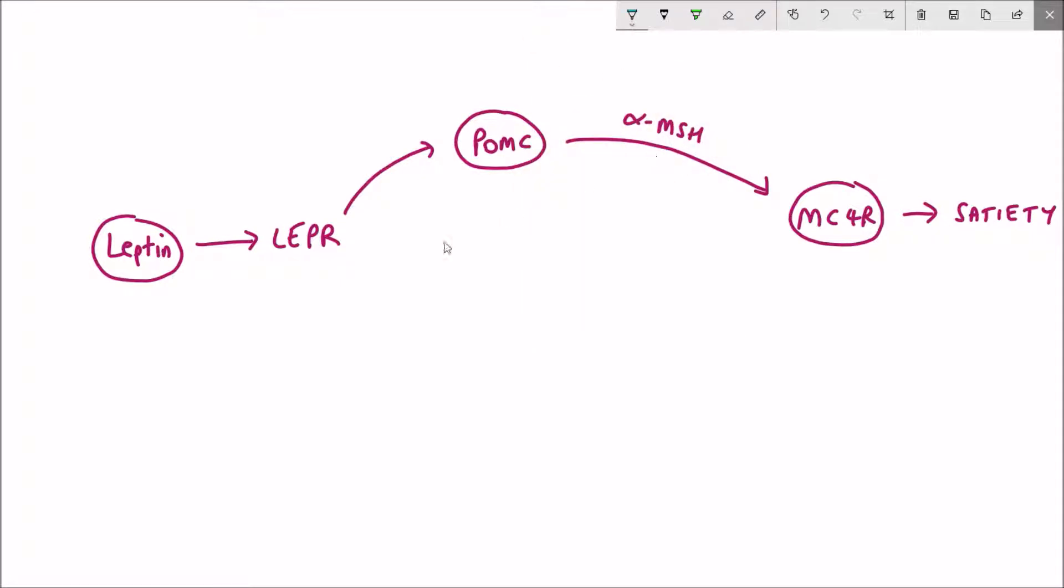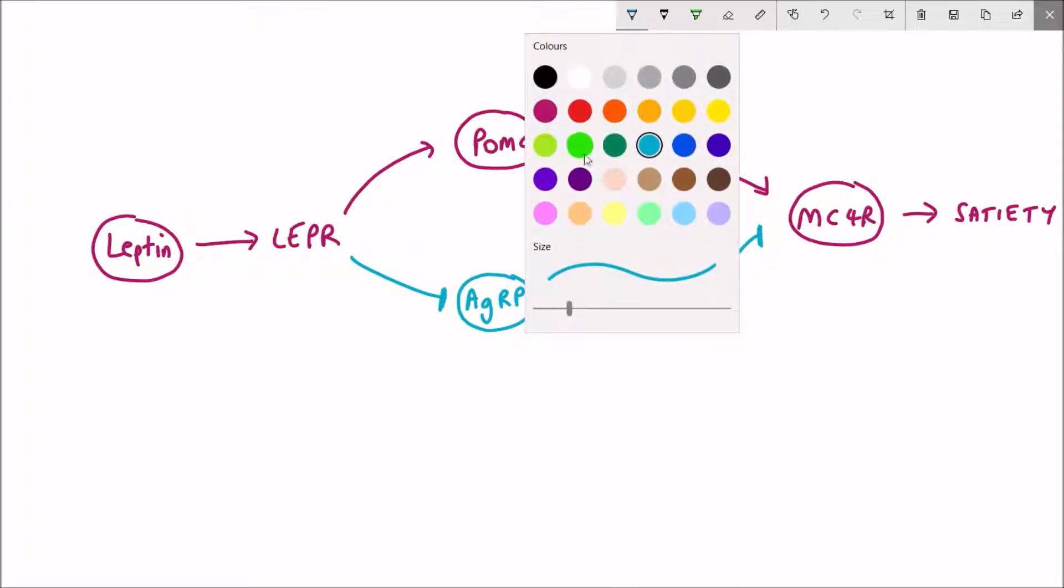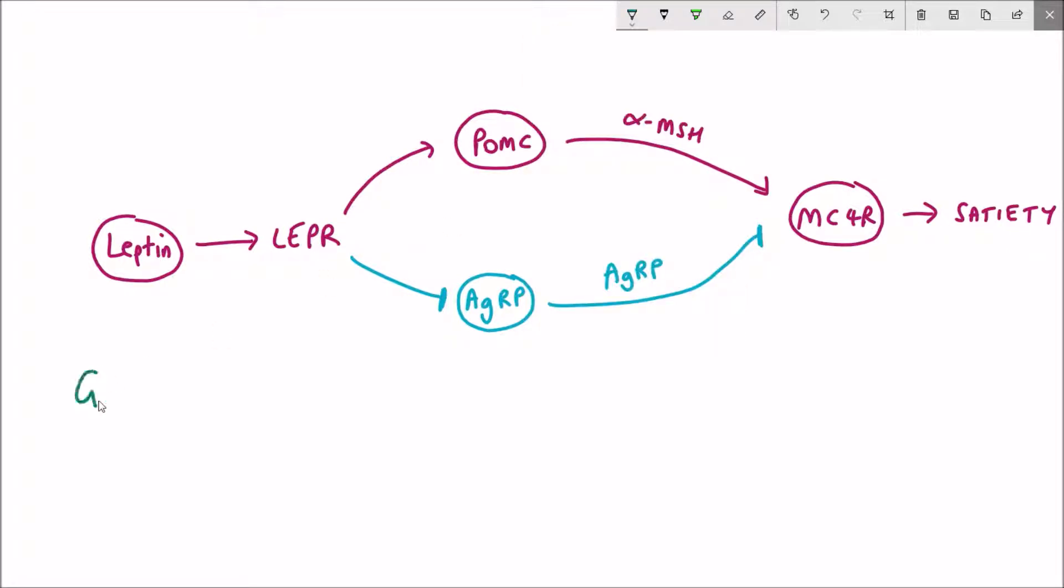But the situation is more complicated. Leptin receptors are not just found on POMC neurons. There are another class called agouti-related protein neurons, AGRP. This has the effect of preventing expression of the agouti-related protein, which is the antagonist of POMC and prevents activation of MC4R. When you have leptin, you reduce expression of the agouti-related protein and get rid of that negative repression.